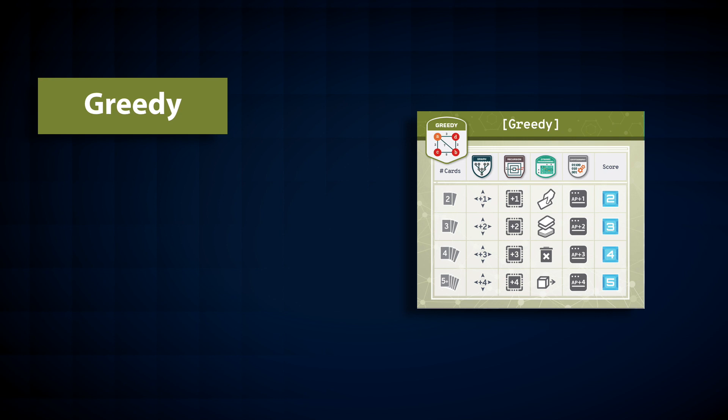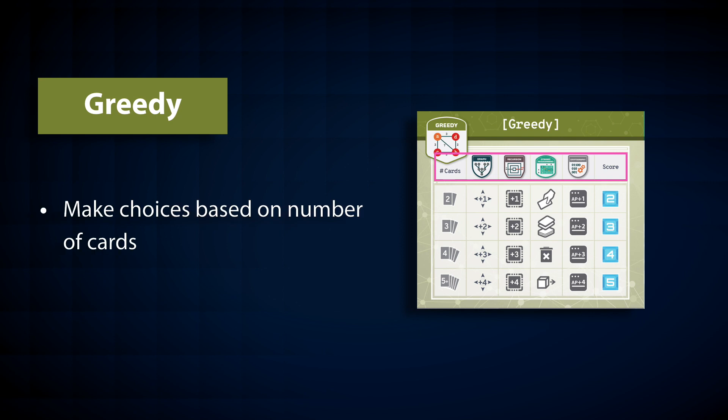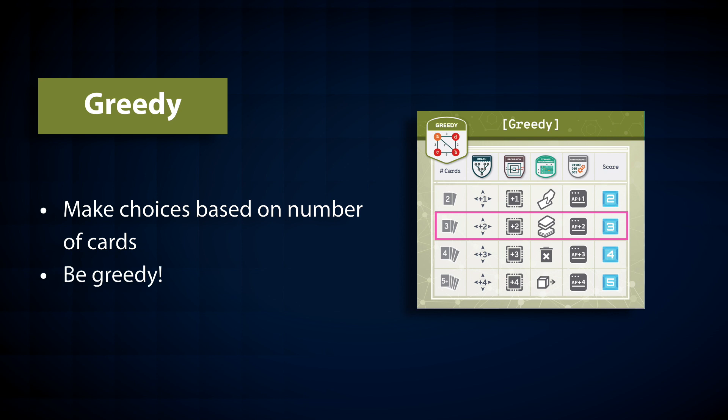Greedy. Last but not least, this is the greedy board. You can make your greedy choices based on the number of greedy cards you play. For example, if you play three greedy cards, you can choose one of the following powers: move two steps in the maze, run two steps in the black box, draw two cards from the draw deck, upgrade two levels in AP, or immediately earn three points.